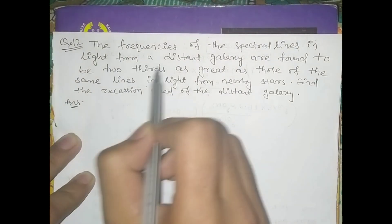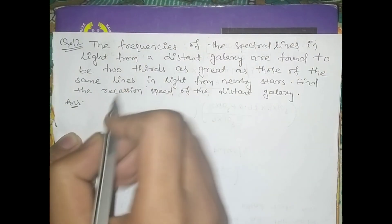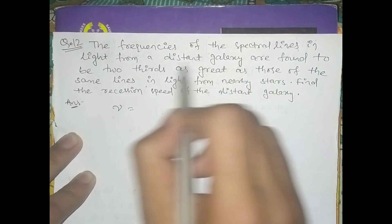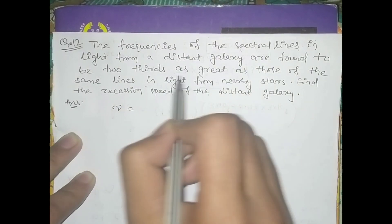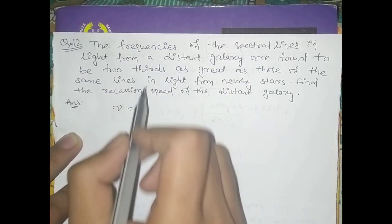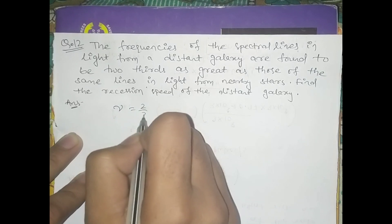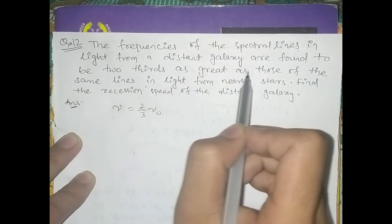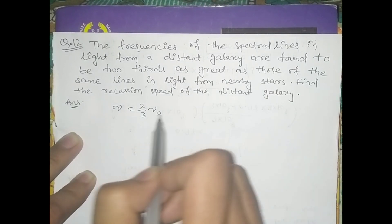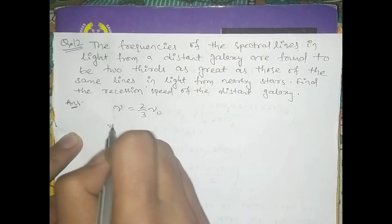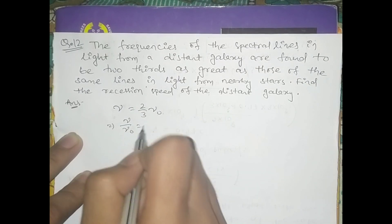What does two-thirds mean here? If nu is the frequency of the spectral lines and nu_zero is the frequency of the nearby stars, then it is said that nu equals two-thirds nu_zero. That is, the frequency is two-thirds as great as those of the same lines in light from nearby stars. So nu by nu_zero equals two by three. This is our first relation.